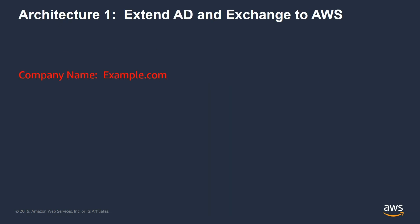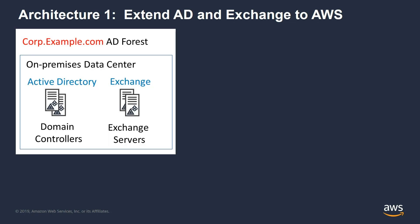The first is extending your AD and Exchange to AWS. For this example, I'm going to use a fictitious company, example.com. Let's say example.com has their Active Directory forest named corp.example.com, and they have an on-premises data center that runs Active Directory domain controllers and Exchange servers. And they want to move their Exchange to AWS.